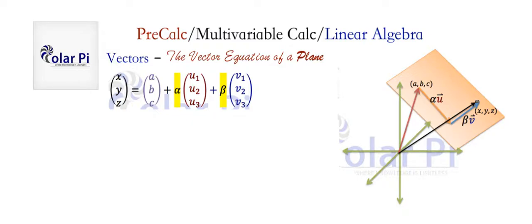Using vector addition, that will be the position vector for point A plus alpha times the direction vector U, plus beta times the other direction vector V. Written in component form it will look like this. This vector represents the position vector for the point A, B, C that allows you to jump on your plane. These are the components of direction vector U, and these are the components of direction vector V.